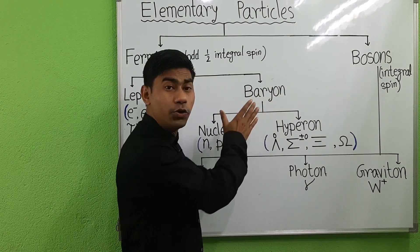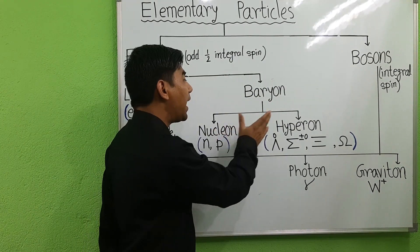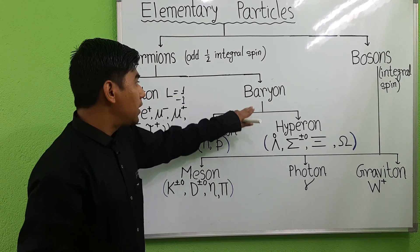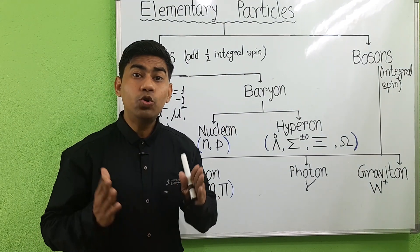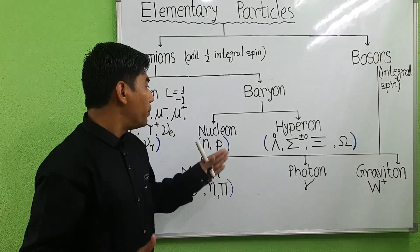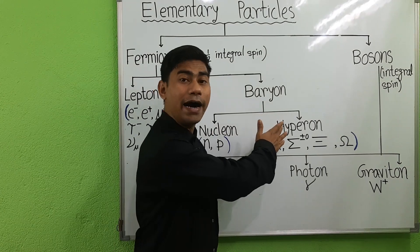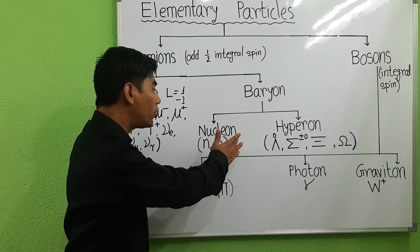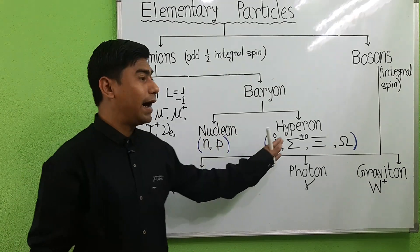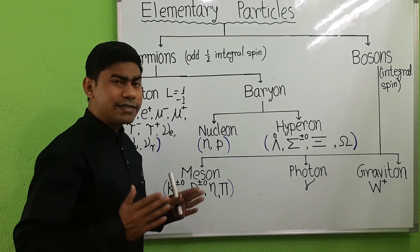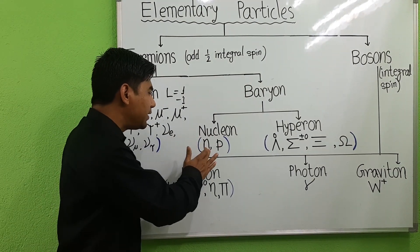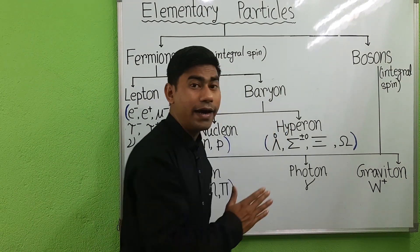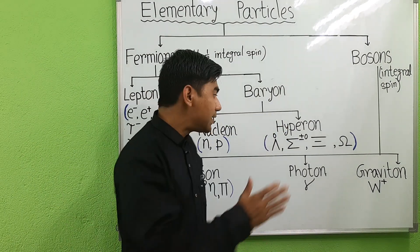The baryon group includes nucleons, hyperons, and their antiparticles. Baryons are divided into two classes: nucleons and hyperons. Examples of nucleons are neutron and proton.